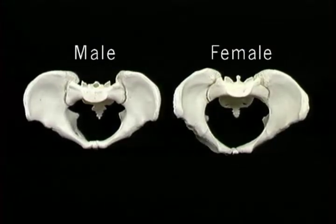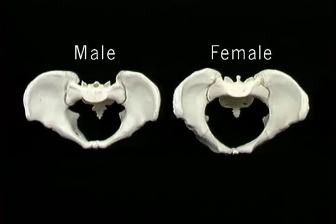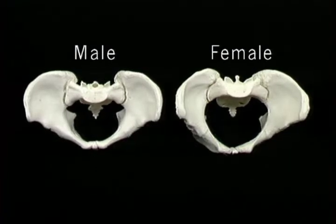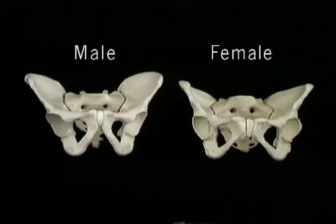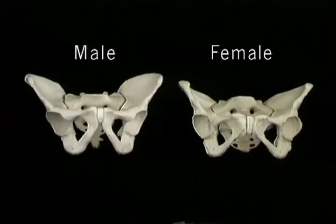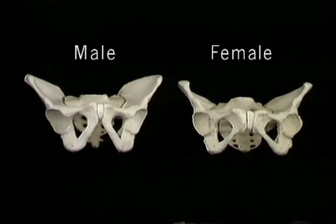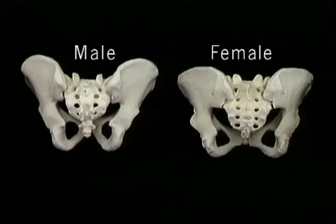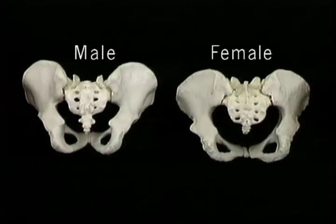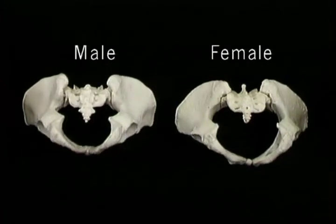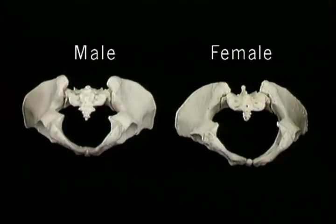When seen from the side, the ischiopubic rami slope backward and downwards toward the ischial tuberosities. There are important differences in shape between the male pelvis and the female pelvis, which is adapted to the requirements of childbirth. The female pelvic cavity is wider from side to side and deeper from front to back than the male. In addition, the angle of the female pubic arch is broader. When seen from below, the inferior pelvic aperture of the female is wider in all directions than that of the male.